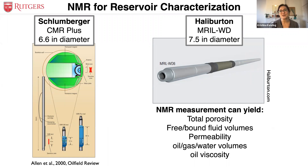NMR is used a lot in reservoir characterization for petroleum research and evaluation. There are two primary tools: a Schlumberger tool and a Halliburton tool. These tools are used because they're really good at yielding total porosity. You can get information about free and bound fluid volume, estimates of permeability, and information about oil, gas, water volumes, and oil viscosity.